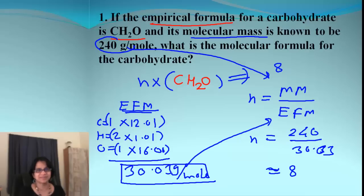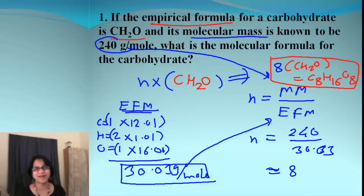So 8 is the factor. Multiply that by 8. 8 times your empirical formula CH2O gives you C8H16O8. That is the molecular formula of the final compound.